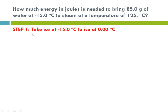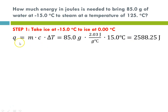Starting with step 1: at negative 15 degrees we have ice, and we take it from negative 15 to zero. Q equals M times C times delta T. Our mass is 85 grams, our C for ice is 2.03 joules per gram degree C, and our delta T from negative 15 to zero is 15 degrees C. That comes out to 2,588.25 joules.